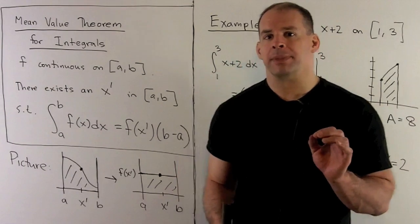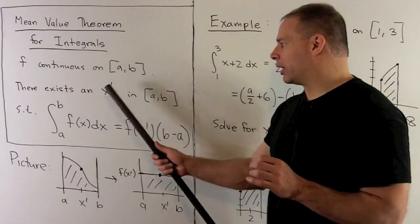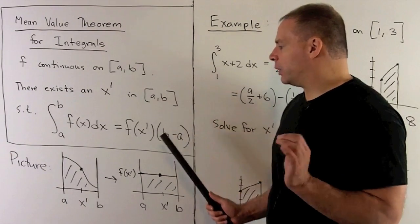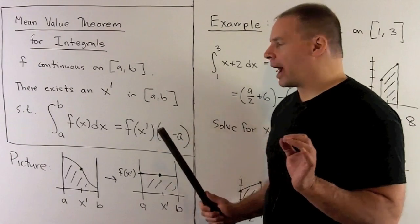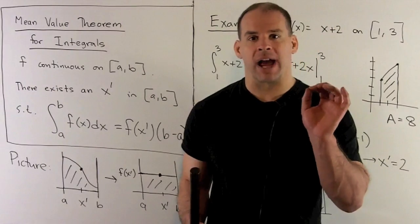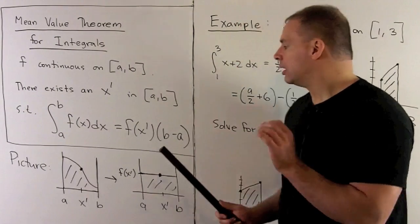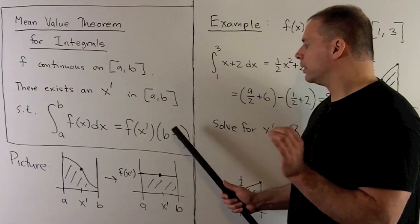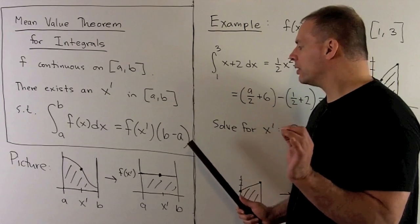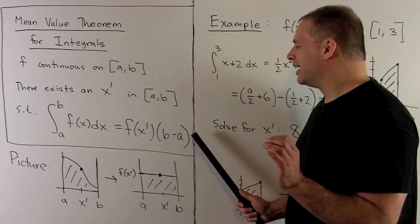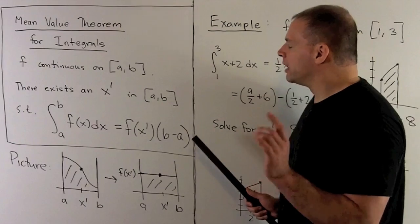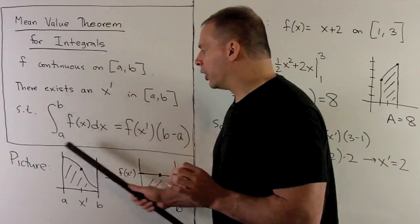The conclusion of our theorem is going to be there's going to be some x' in our interval, such that if we apply f to x', that's going to be the height of a rectangle. If I multiply that by the length of our interval, so it's b minus a, the area of this rectangle is going to be equal to our net area over here.